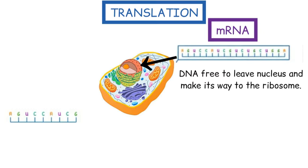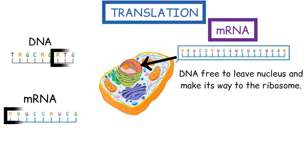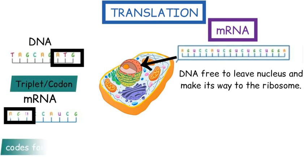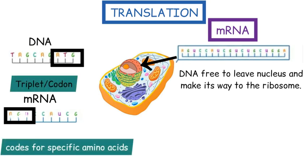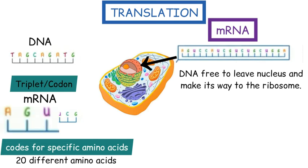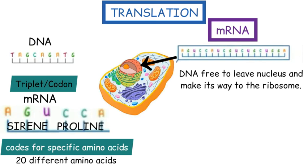So going back to our overview, we've now got an mRNA copy of the gene inside the nucleus, which is free to leave the nucleus and make its way to the ribosome, where it can undergo translation to produce a protein. To help understand this part, it's important to remember that for both DNA and mRNA, each group of three bases — called a triplet or codon — codes for a specific amino acid. To make proteins, our cells use 20 different amino acids and each one has a different three-base codon. For example, the triplet A-G-U codes for the amino acid serine, while C-C-A codes for proline. You don't have to remember these examples; we're just using them to illustrate the point.